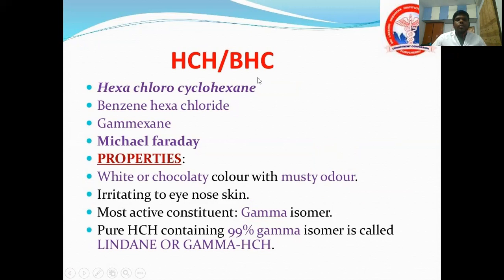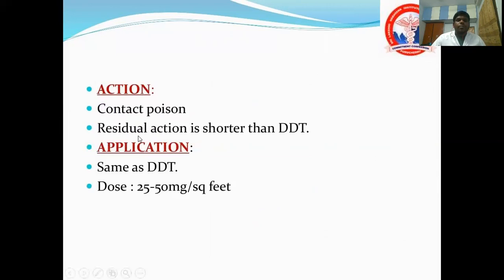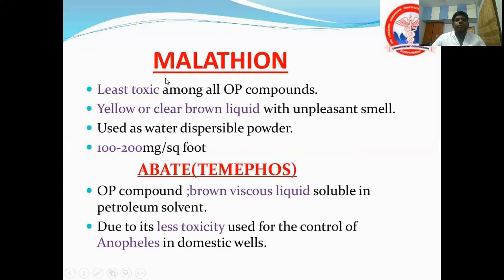Hexachlorocyclohexane (BHC/benzene hexachloride) is a white or chocolate-colored powder with a musky smell, irritating to eyes, nose, and skin. The active form is the gamma isomer. Pure HCH containing 99% gamma isomer is called lindane. It acts as a contact poison and its residual action is shorter than DDT. Application is the same as DDT.